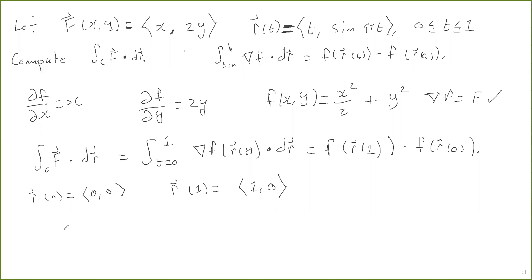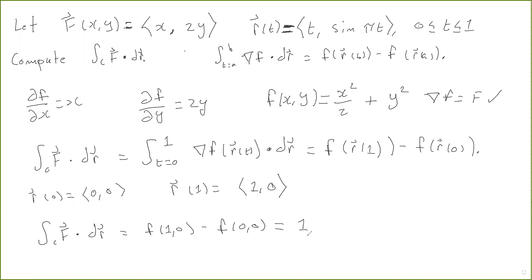So the line integral of F over dr is going to be f of (1, 0) minus f of (0, 0). f of (1, 0) — when you plug in x equals 1 and y equals 0 — you get 1 half. And f of (0, 0) — when you plug in x equals 0 and y equals 0 — you get 0. So the answer is 1 half.